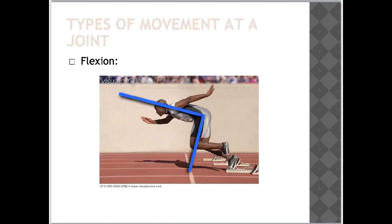Flexion is defined as the bending of a joint so that the angle of the joint is reduced. Looking at the angle highlighted with the two blue bars, the joint is the hip joint. As this athlete drives out of the blocks, he needs to drive his knee up towards his chest — this reduces the angle, so this movement is flexion of the hip. You can also see shoulder flexion as he drives his arm upward.